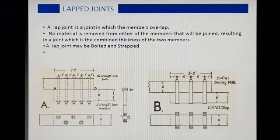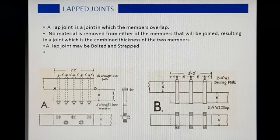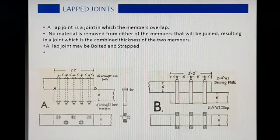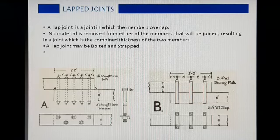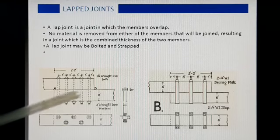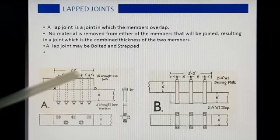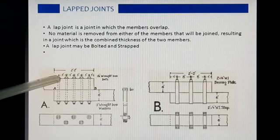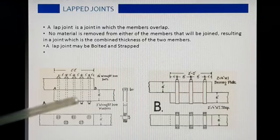Lap joint एक ऐसा joint है जो कि length बढ़ाने के काम में आता है, पर उसमें हम दोनों members को आपस में overlap करके, bolt या straps के माध्यम से joint करते हैं. इस प्रकार के joint में किसी भी प्रकार का material, projection या depression wooden member में create नहीं करते हैं. जैसा कि हम figure में देख सकते हैं, हमने 2 wooden members को आपस में overlap कर दिया है और bolts के माध्यम से उनको आपस में join कर दिया है.